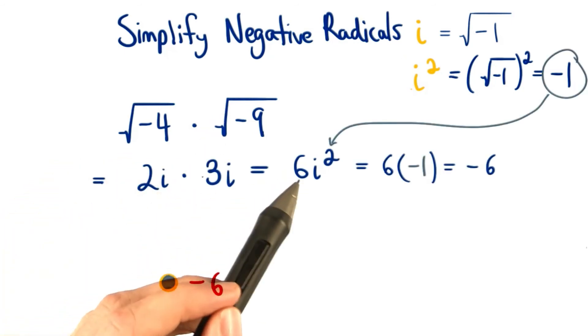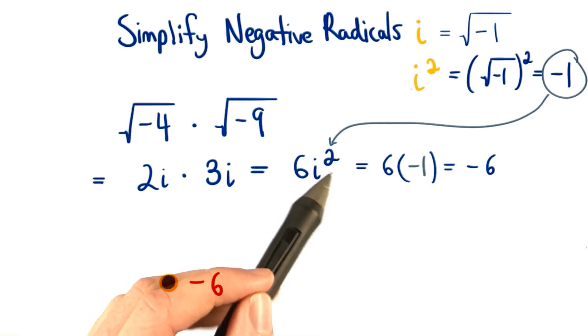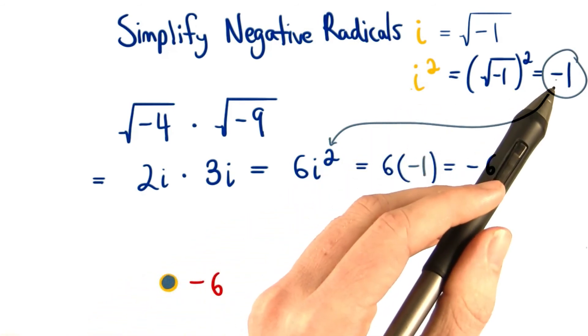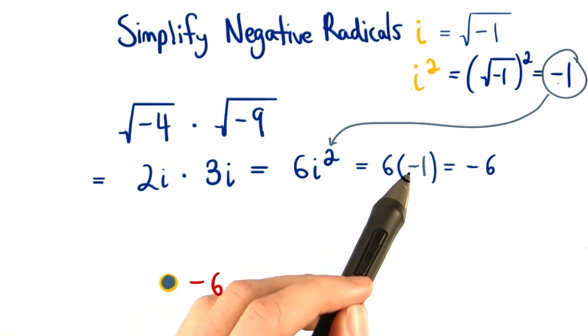Multiplying will get 6i squared. We can replace this i squared with its corresponding value, negative 1. We substitute that in to get 6 times negative 1, which equals negative 6, our answer.